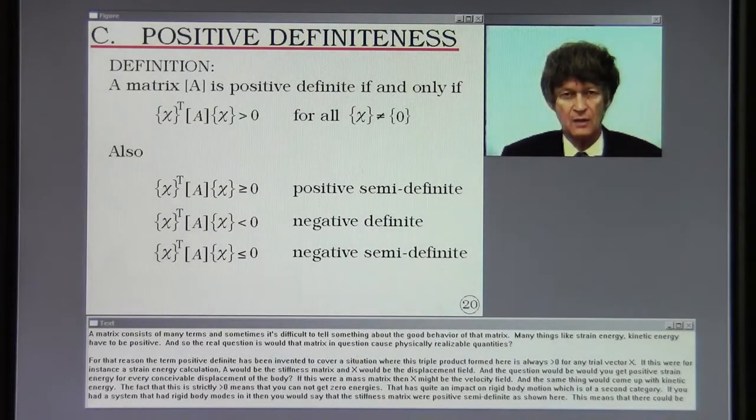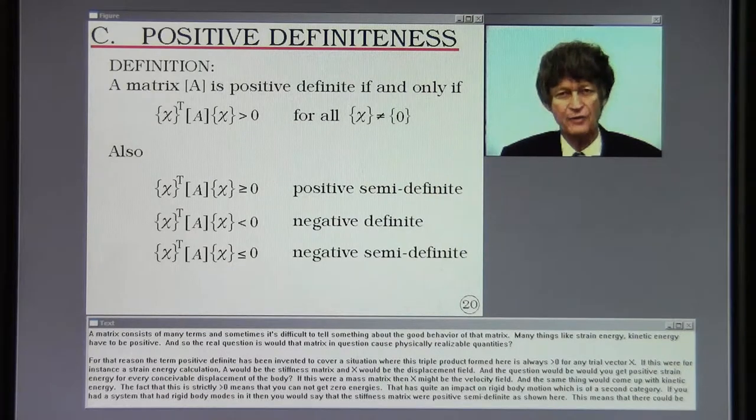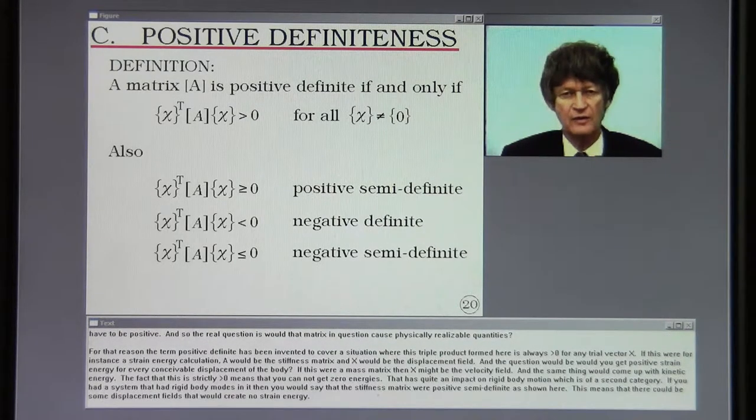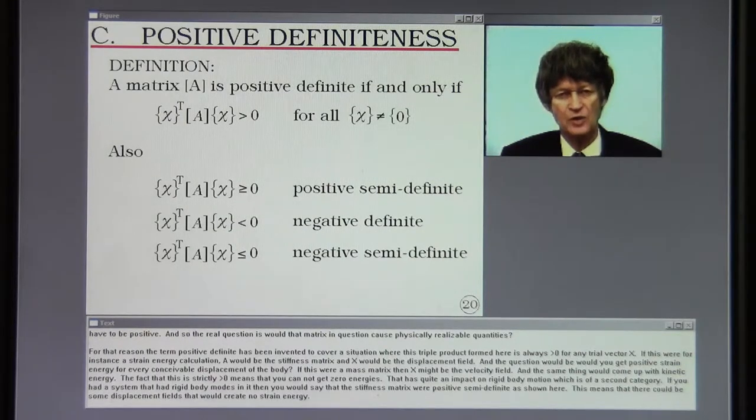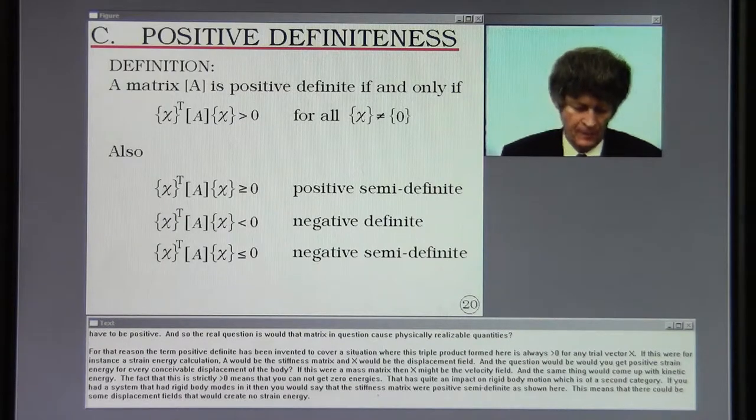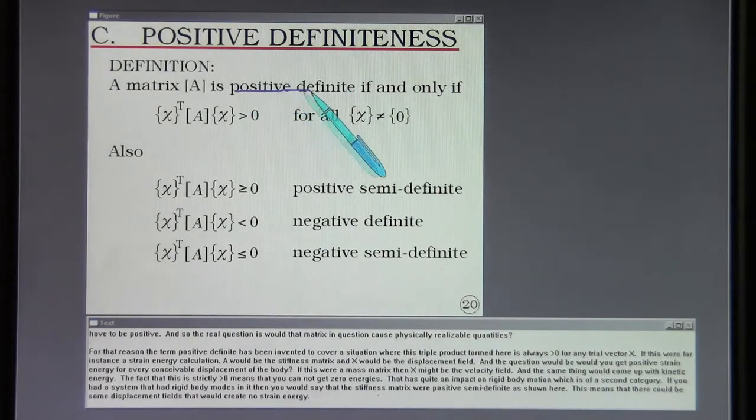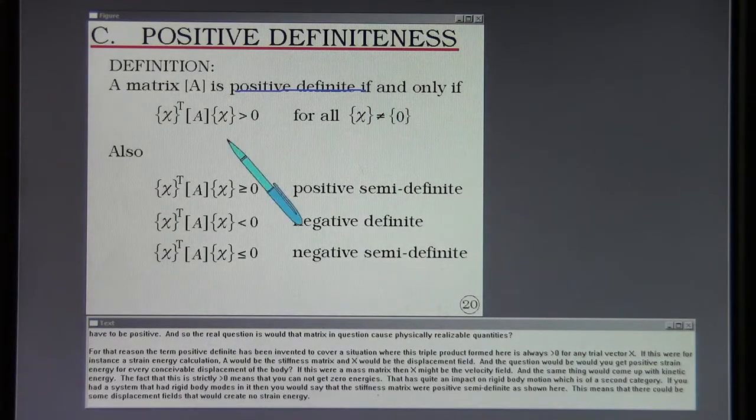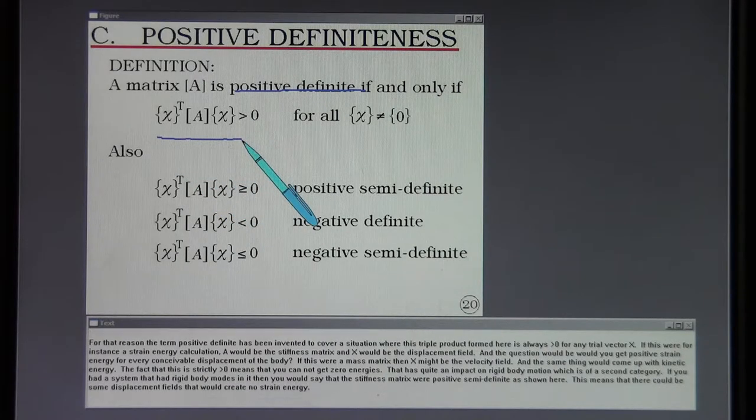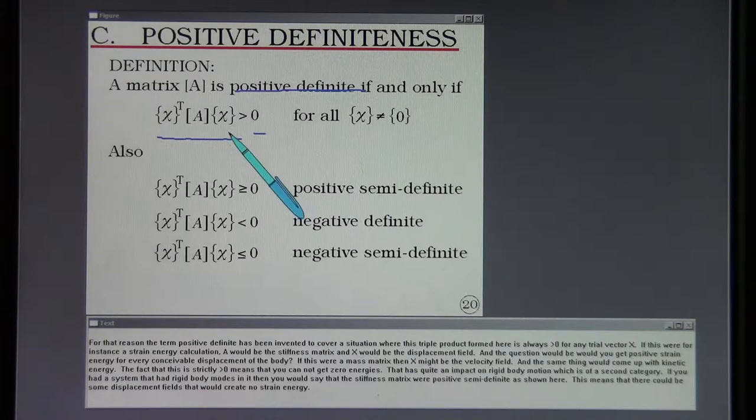A matrix consists of many terms and sometimes it's difficult to tell something about the good behavior of that matrix. Many things like strain energy, kinetic energy, have to be positive. So the real question is, would that matrix in question cause physically realizable quantities? For that reason the term positive definite has been invented to cover a situation where this triple product formed here is always greater than zero for any trial vector x. If this were for instance a strain energy calculation, A would be the stiffness matrix and x would be the displacement field. The question would be, would you get positive strain energy for every conceivable displacement of the body?